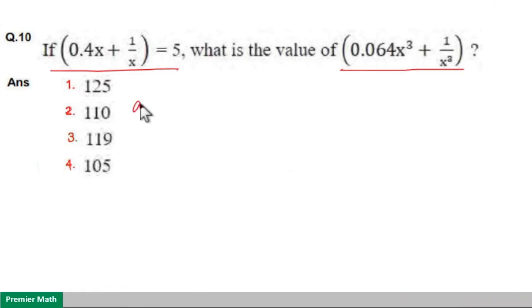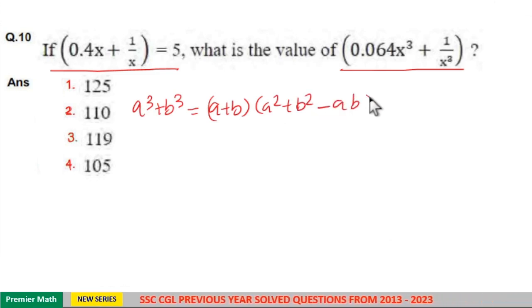This is in the form of a³ + b³, which equals (a + b)(a² + b² - ab).